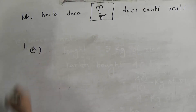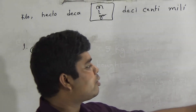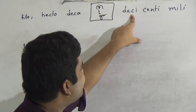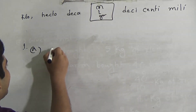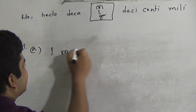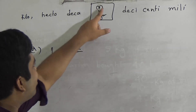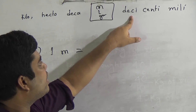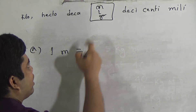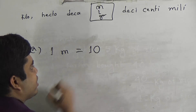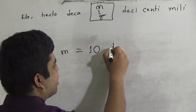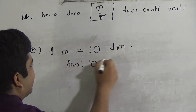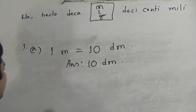Part A: 1 meter equals how many decimeter? Please look at the chart. From Meter to Deci is 1 step. For this 1, I write here 1, and for 1 step I write 10. So 1 meter equals 10 decimeter. I hope you have understood and this is the answer: 10 decimeter.